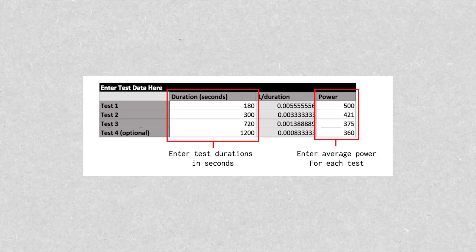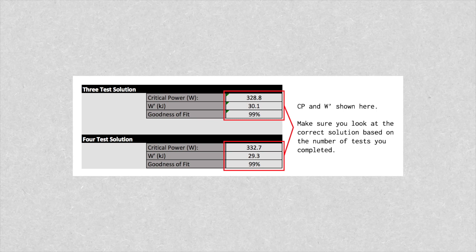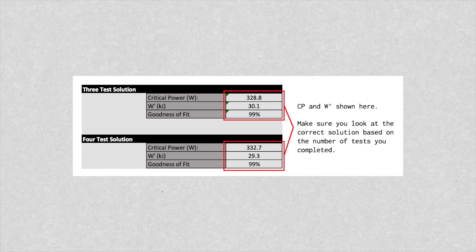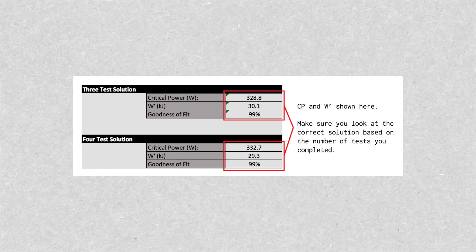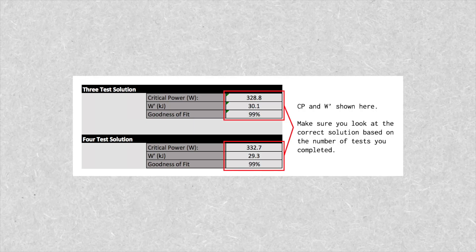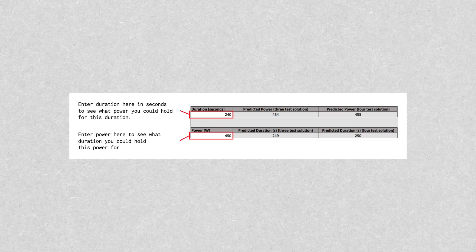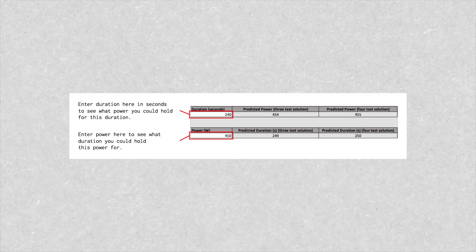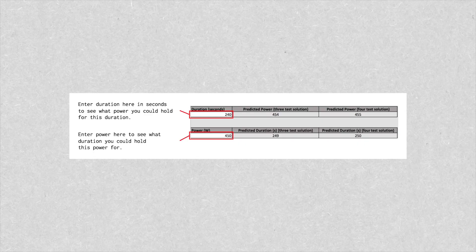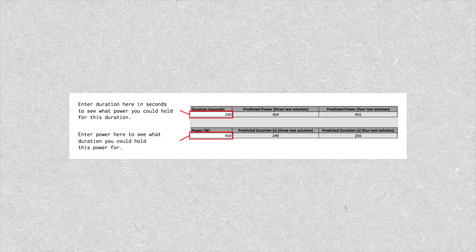Step one: enter your test duration in seconds and average power for each test effort. Step two: your critical power and W' values will be calculated automatically by the spreadsheet. Make sure you look at the correct solution, e.g. the four-test solution if you completed four maximal efforts. The goodness-of-fit metric tells you how accurate your critical power and W' values are likely to be — ideally above 97%. You can also use the spreadsheet to estimate the power you can hold for a given duration, or the time you could hold a given power output, for durations between 3 and 20 minutes.